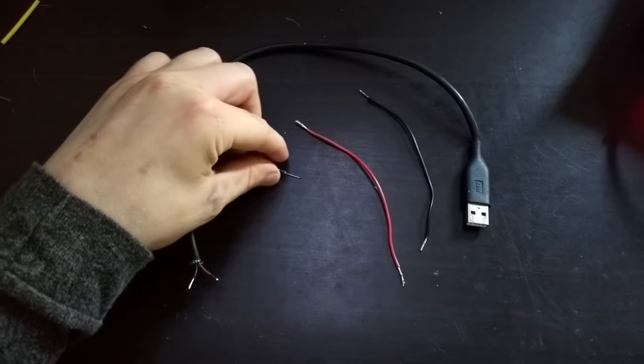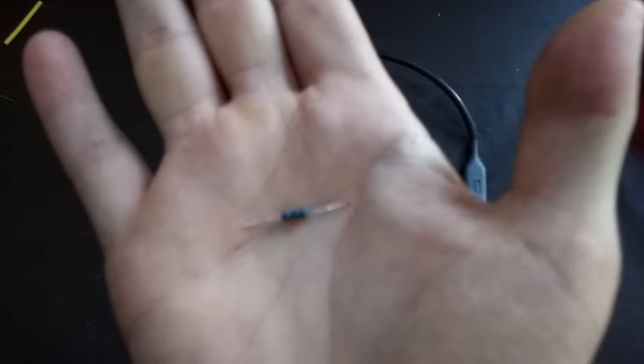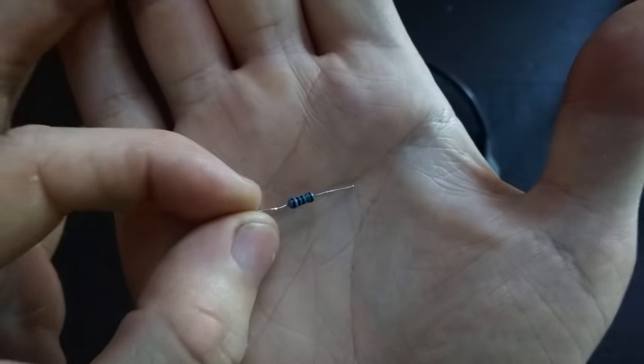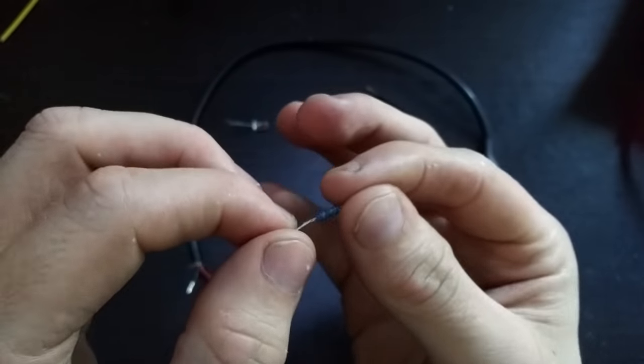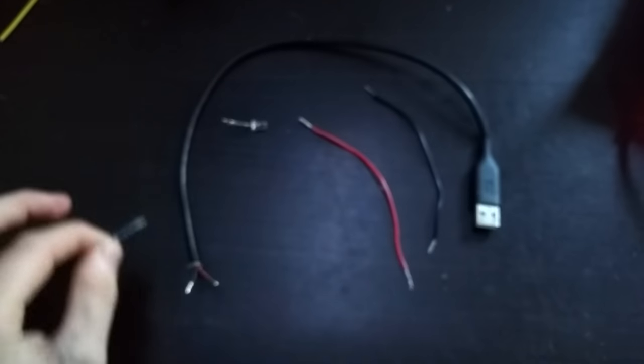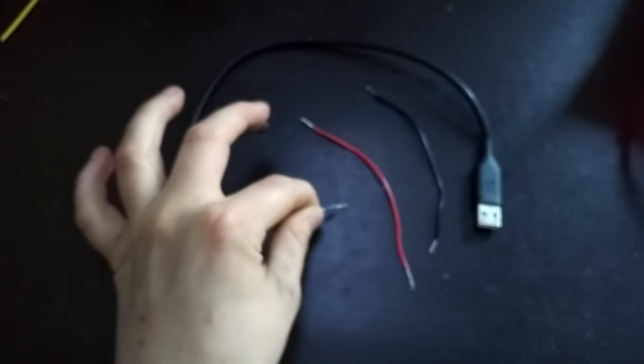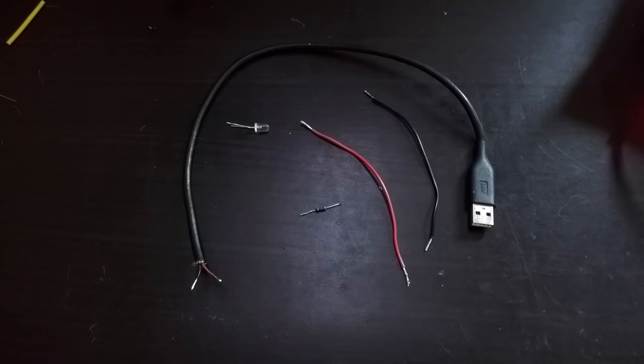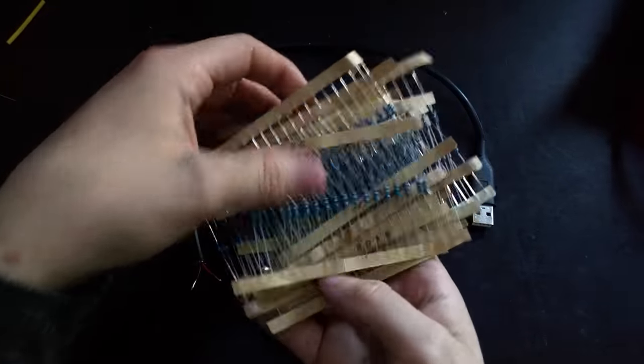We have a resistor here. This is what a resistor actually looks like. Resistors look like this in real life. They come in different sizes, shapes, and of course different resistances. This one here is a 150 ohm resistor. You can buy resistors very cheap.